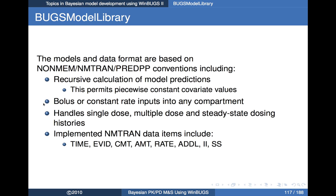The data structure used is based strongly on NONMEM/NMTRAN conventions. The data items are equivalent to the NMTRAN items: time, EVID, CMT, AMT, rate, ADDL, II, and SS. As a result, you can handle most types of NONMEM datasets. One exception is we haven't yet implemented compartment-specific reset via a negative compartment value. But for the most part you can handle NONMEM datasets fairly easily.